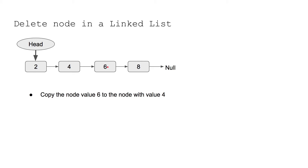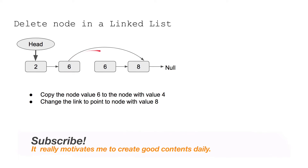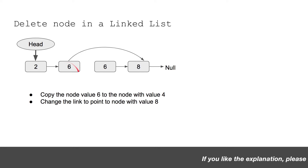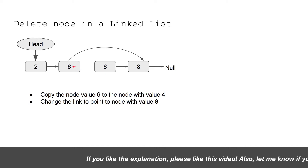Since we have access to the given node, we can get access to its next node and copy that value here. Then we change the link of the current node to skip the next node and point directly to the node after it — the node with value 8. We do this by taking the link of the next node and assigning it to the current node's next pointer. Traversing the list now gives 2 → 6 → 8, which is what we wanted.